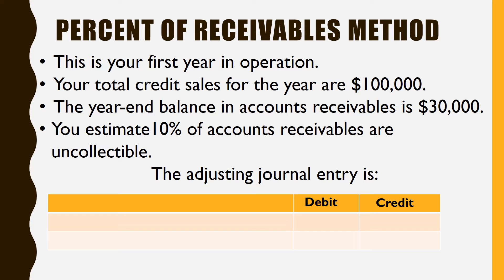Since these are only the people that still owe me at the end of the year, I'll usually have a higher percentage. Think about percent of sales — some of those people have already paid you, so you know they're good, so you use a rather small percentage there. But for accounts receivable, I'm going to say that 10% of my accounts receivable are uncollectible.